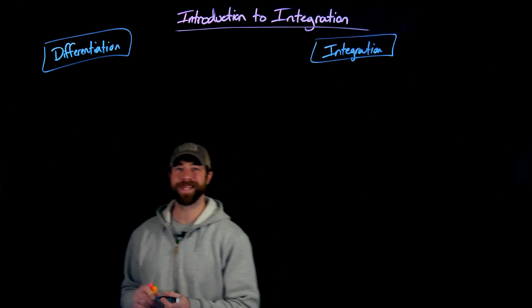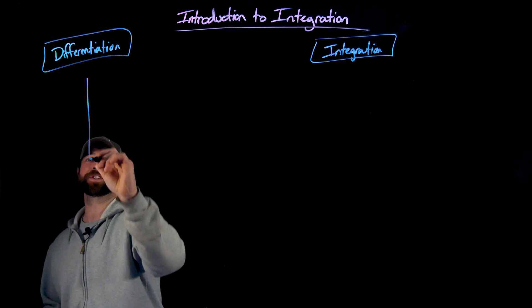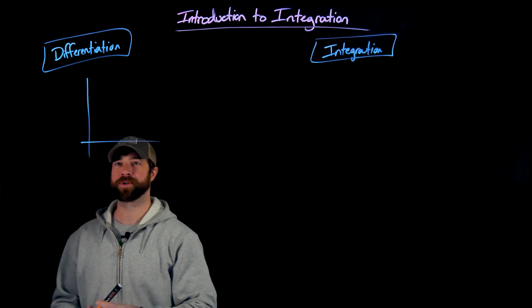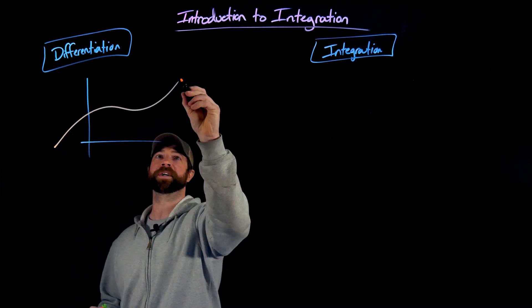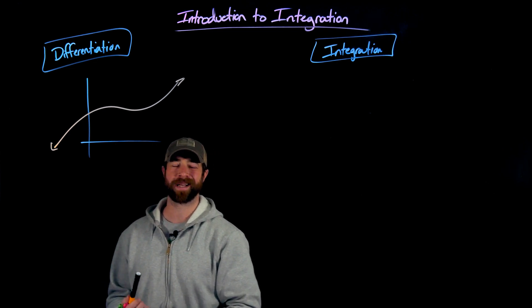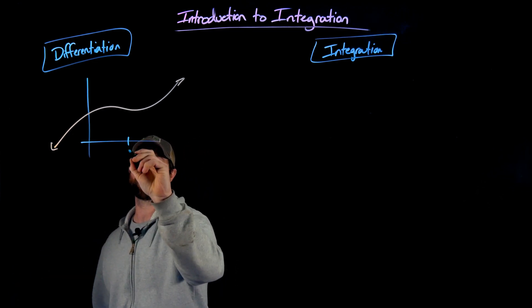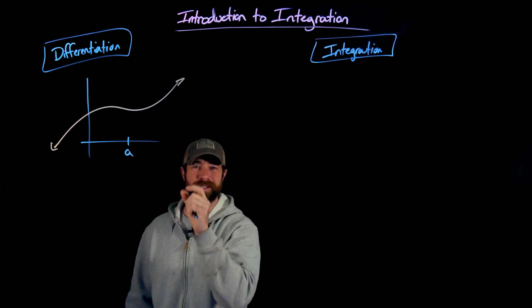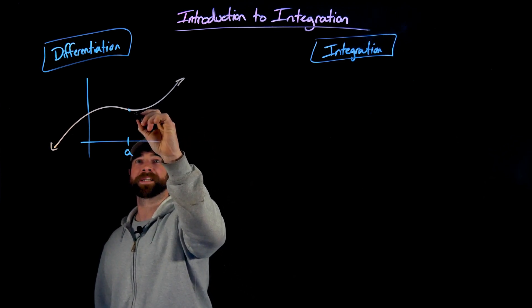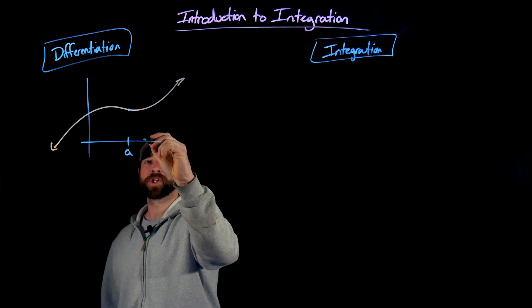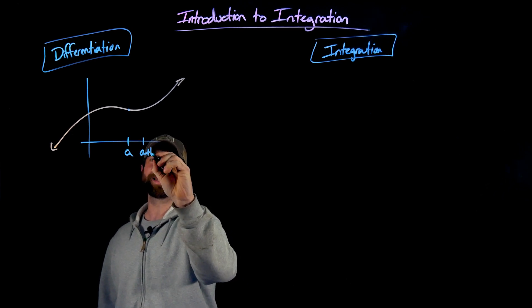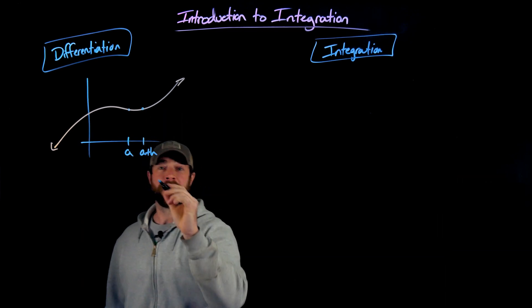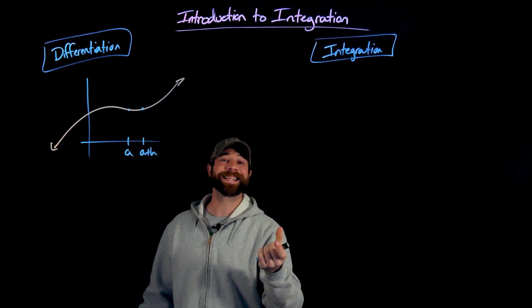Just to remind you, the idea of differentiation was to take this idea of the slope of a secant line through two points. So given a function here we're going to take a point that we're trying to attack. Let's call this a in this case. And we want to find the instantaneous slope at that point as it appears on this function. So what we do is think about a point a plus h which has through these two points we can find the secant line.